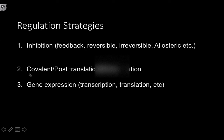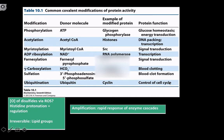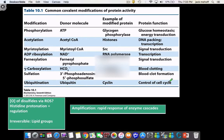What most of this video is going to be about is covalent modifications, sometimes called post-translational modification. And then obviously in genetics, you learned about how transcription and translation can control the amount of enzyme present in the cell. The first of these, and really the most important in my opinion, is phosphorylation.